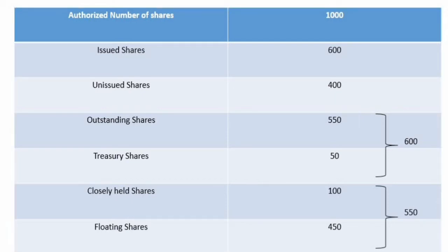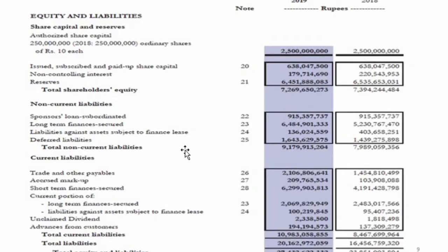These are the types that you need to understand. Now we are looking at how companies present all this information in their balance sheet — how they manage it and what information is given to users who are looking at their financial statements and annual reports. This is a balance sheet example from a Pakistan-based company.